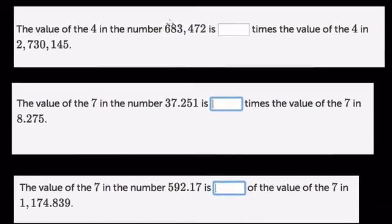So here, the value of 4 in the number 683,472 is how many times the value of the 4 in 2,730,145? Well, the 4 here is only in the tens place. So this is 4 tens.